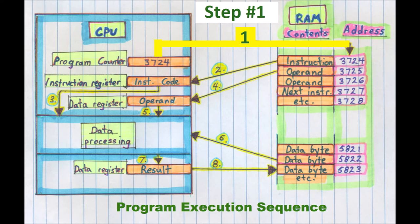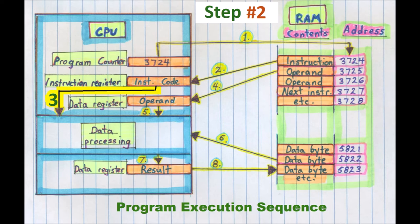Number 2. The instruction code is returned to the CPU from RAM via the data bus. The CPU reads the instruction from the data bus into an instruction register. Then, the CPU decodes and executes the instruction.